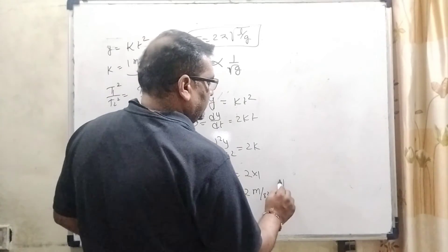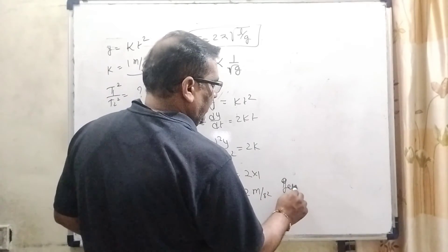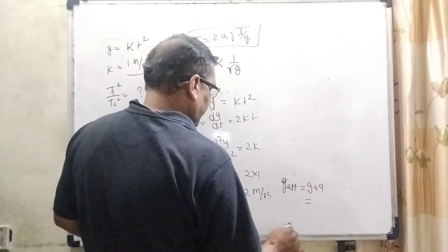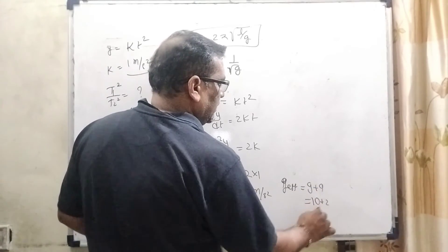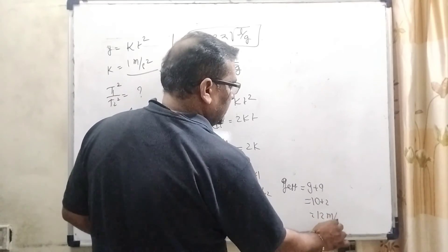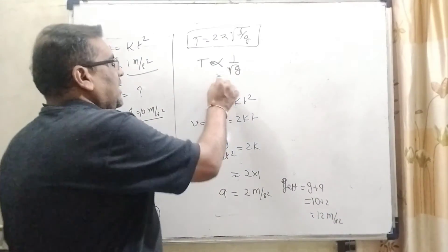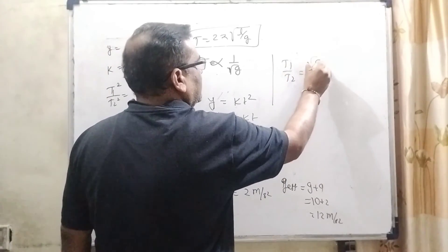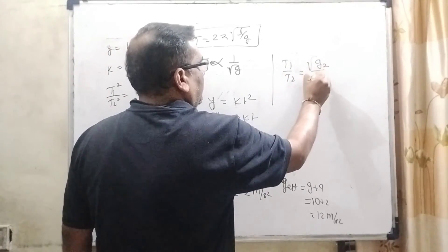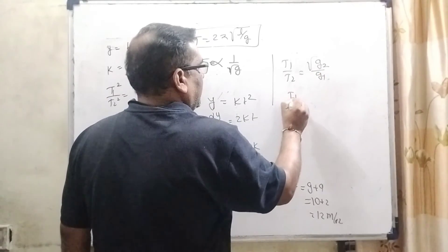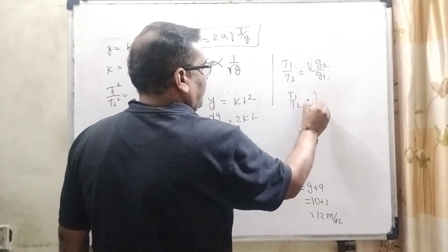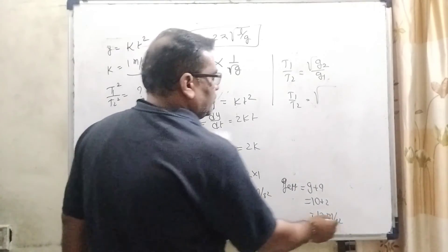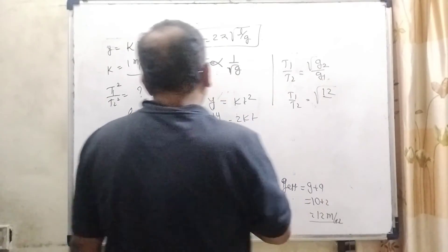So, in second case time period effective G, effective G is G plus A, then it can be written as 10 plus 2 that is 12 meter per second square. So, in this case T1 upon T2 can be written as G2 upon G1, then that is effective G2, G2 means that is effective, additional 12. And here G1 is given already, that is 10.